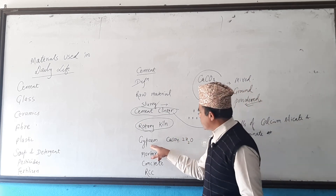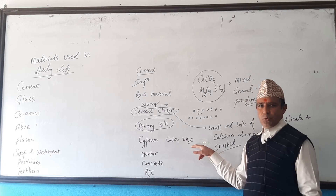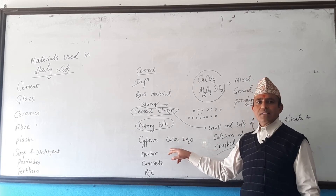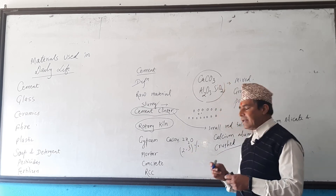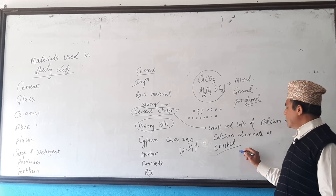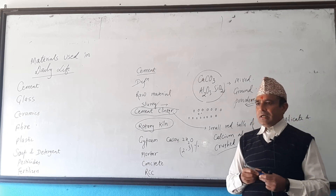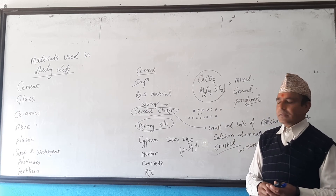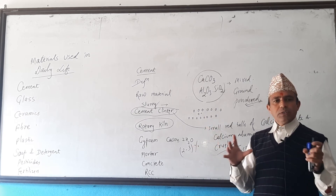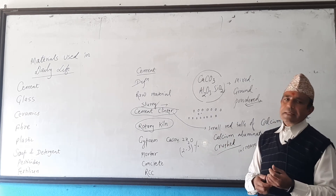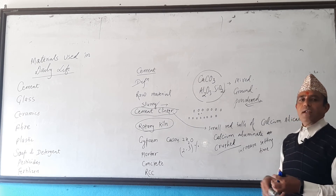One important thing: gypsum. In cement they add the chemical CaSO₄·2H₂O — calcium sulfate dihydrate — which is gypsum. About 2 to 3 percent gypsum is added to cement to increase its setting time, meaning the cement does not solidify very quickly, so we can give the correct shape to objects. Adding gypsum also increases the quality of the cement.